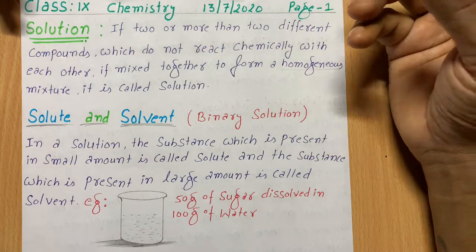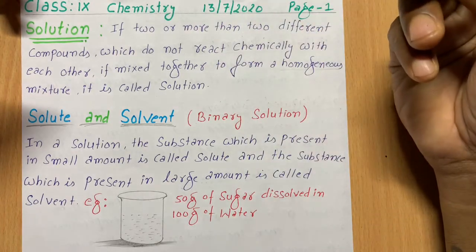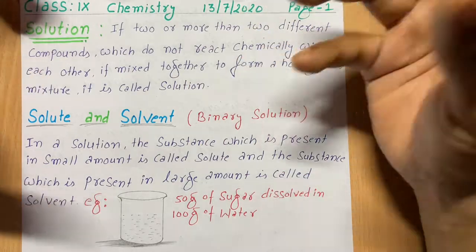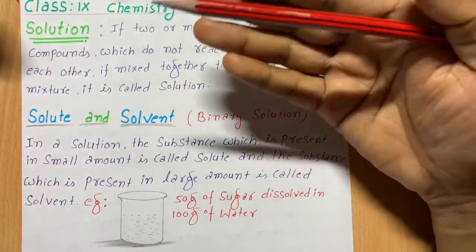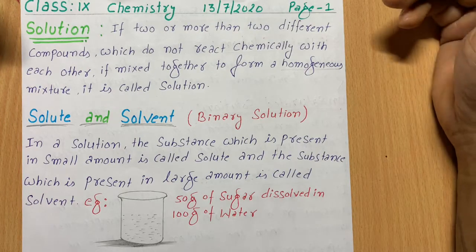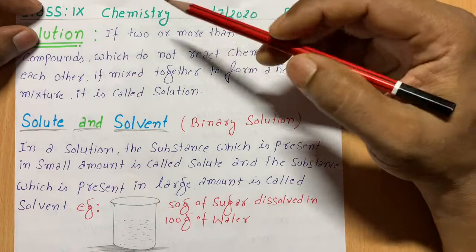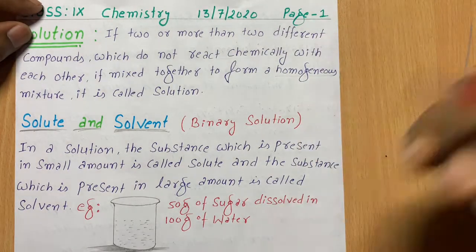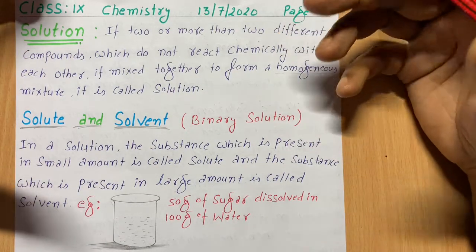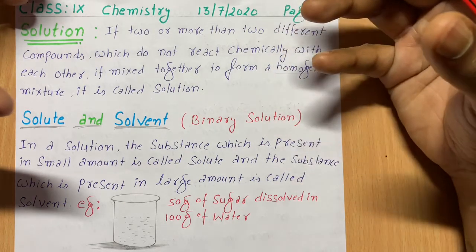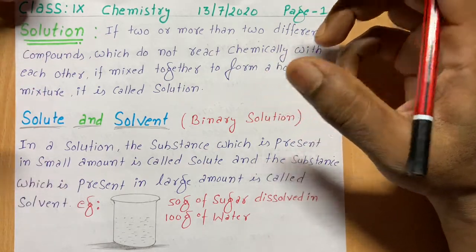Milk and water are mixed properly, so that is a solution. If you mix sugar into water, then it is also a homogeneous mixture. Now the next topic is binary solution — in this case there are only two compounds present in the solution.